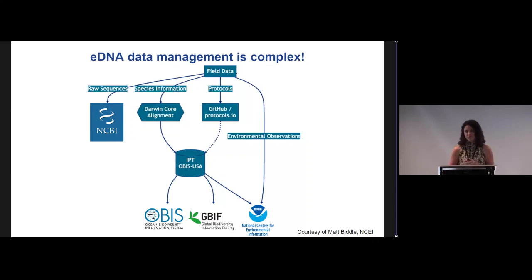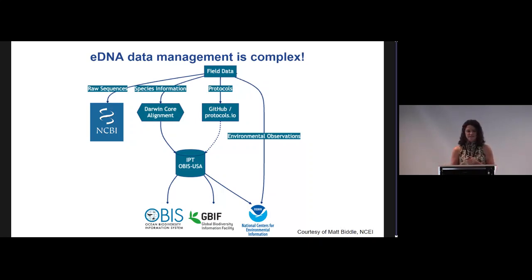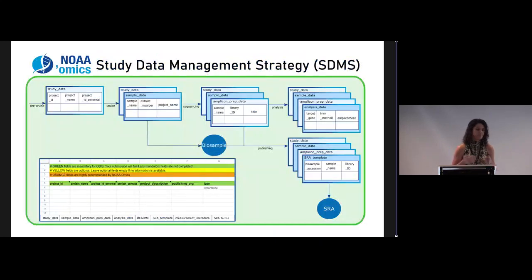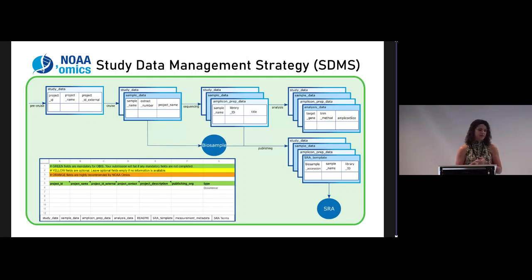Then you have all of the code and protocols for how we arrived at these assignments — where is a good place to put all of those scripts? This is a concept map, courtesy of Matt Biddle at the National Centers for Environmental Information, of what we'd like to do. But even this is a lot to ask for any standard researcher. So what our group is trying to do is start to make templates and workflows that can make it easier for us — we have many thousands of samples — but ideally make it applicable across NOAA's omics work and useful to other folks as well.